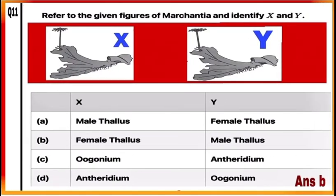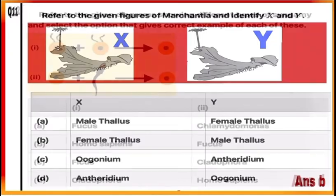Question 11: Refer to the given figure of Marchantia and identify X and Y. In the given figures, X is a female thallus bearing archegoniophore while Y is a male thallus bearing antheridiophore. So the correct answer is B: X is the female thallus and Y is the male thallus.